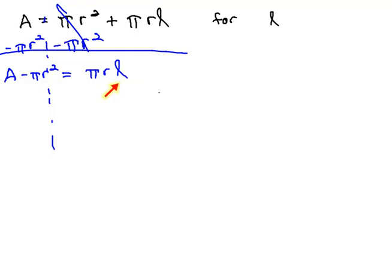Remember, we are looking for the l. Don't move the l, but get rid of everything else. We need to get rid of the pi and the r that are multiplied by l by dividing both sides by pi r.